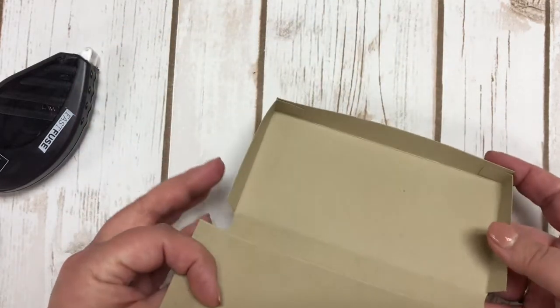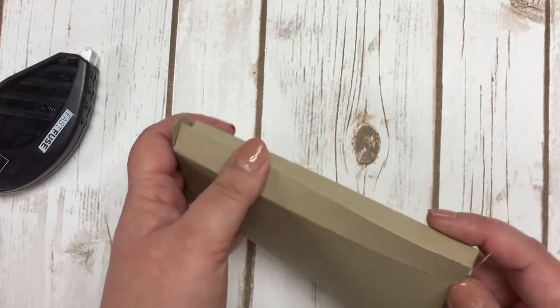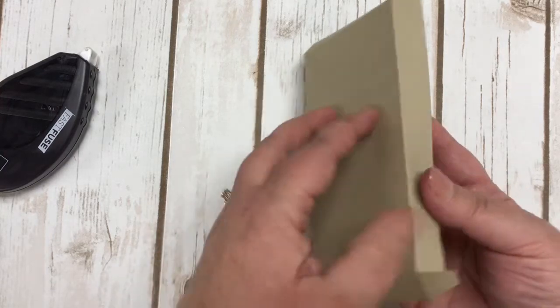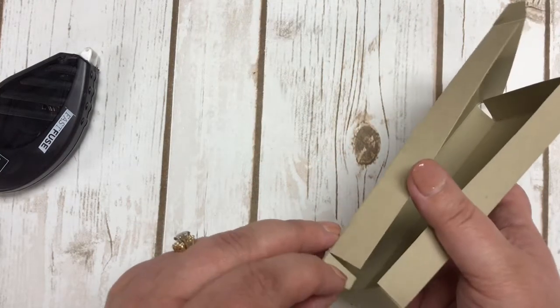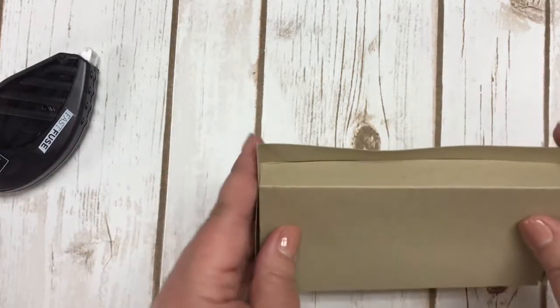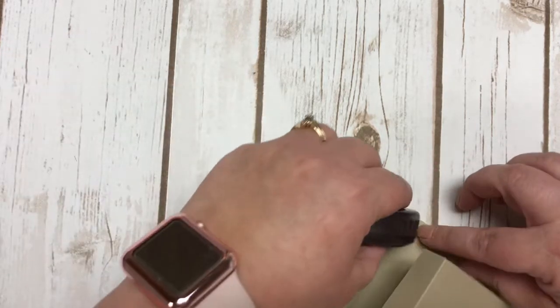Now before you glue down the opposite two sides, you want to make sure that you fold this over first because you want to make sure that this is going to fit. This has to fold over top of the box and then you're going to be able to glue that down. Let me get this folded here and get some adhesive and put onto these as well.